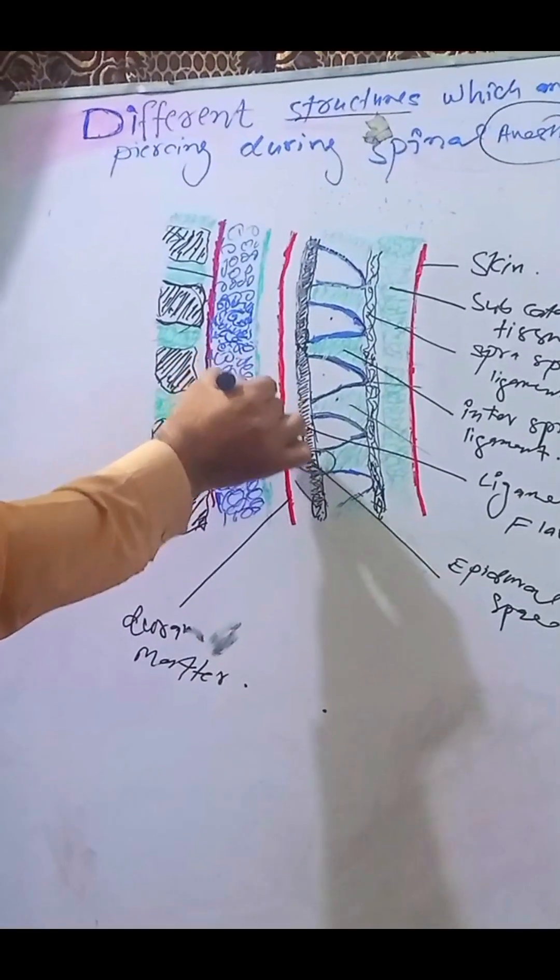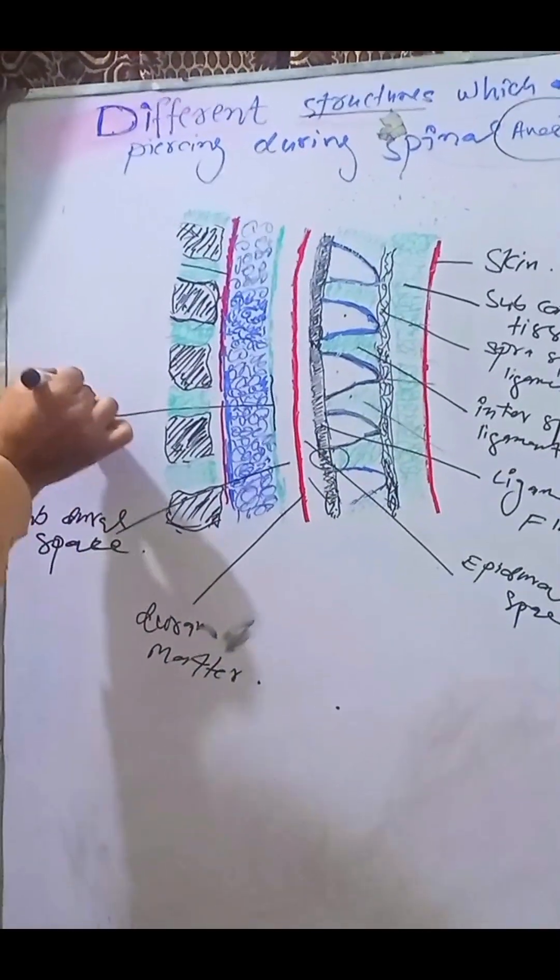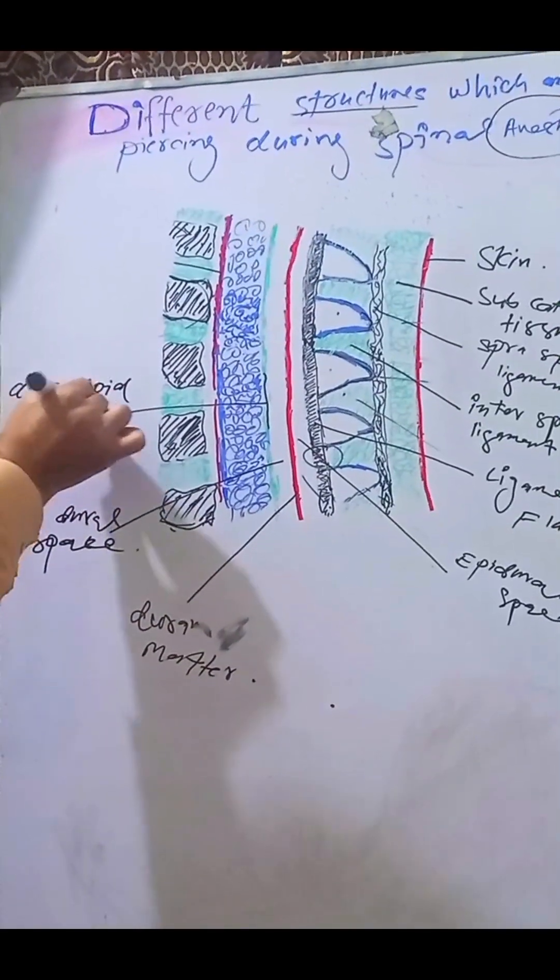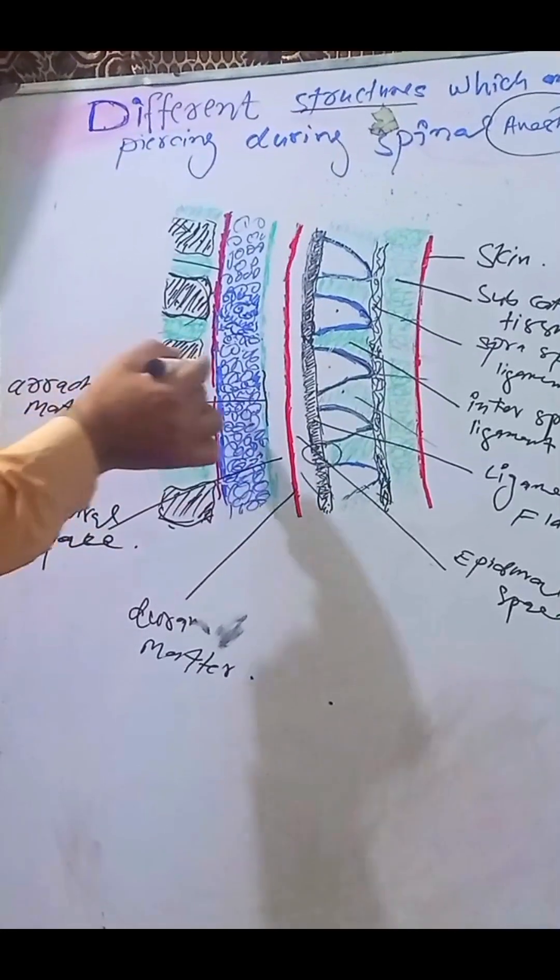Next to subdural space, there is another layer called the arachnoid matter. When we cross it, we enter the subarachnoid space.